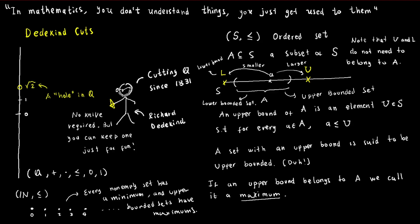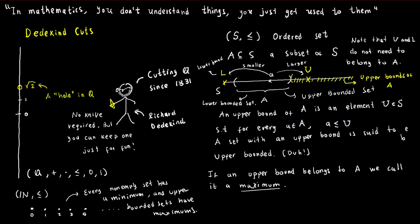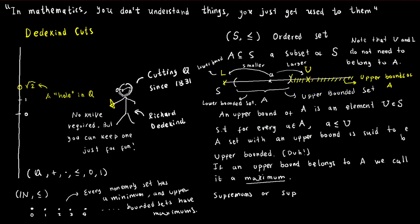Indeed, for every x smaller than 0, the number x over 2 is larger than x, but also smaller than 0. Lastly, we've got the minimum of a set of upper bounds of A, which we call the least upper bound or supremum of A. And the maximum of the set of lower bounds of A is the greatest lower bound or infimum of A.